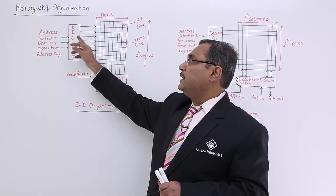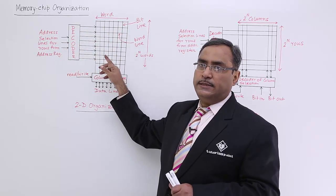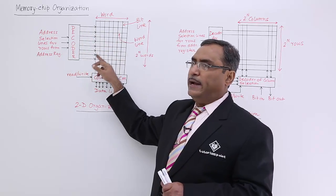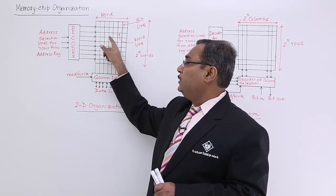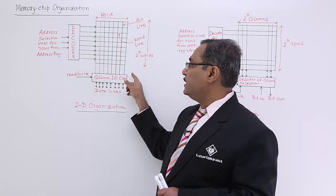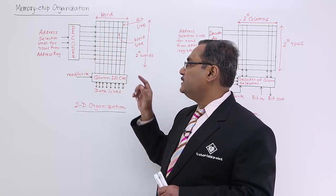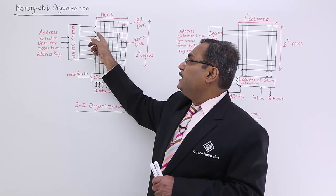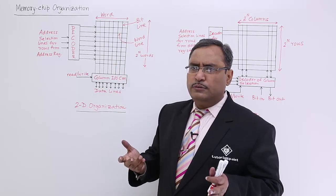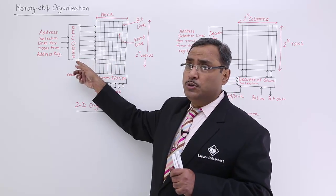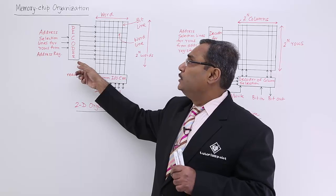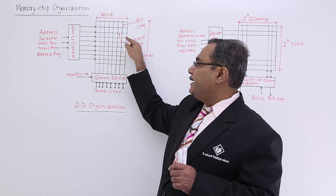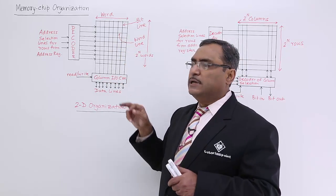Here we are having 3 input lines and 8 output lines. Depending upon the input bit combination, one of the output lines will be enabled. With the particular output line, we are having 8 vertical lines. The number of vertical lines might be 8, 16, or 24 — that is not dependent on the decoder size. The word, meaning the number of bits in this particular line, will be coming out through the IO circuit.